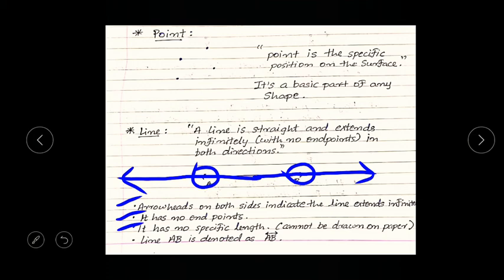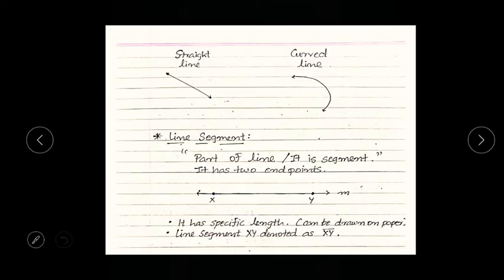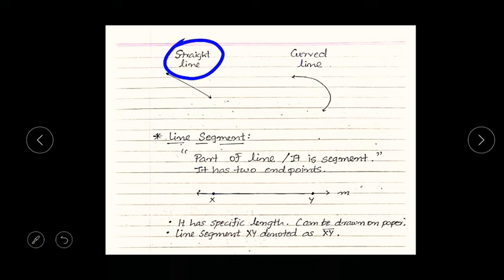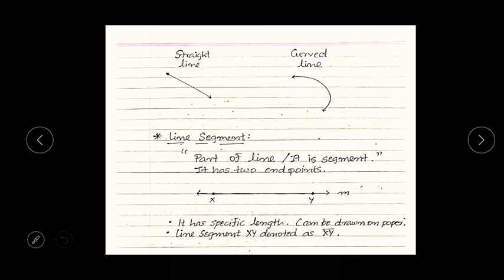The line has no specific length because it extends infinitely, due to which we cannot draw a line on paper, but we can represent it on paper. Line AB can be denoted as AB with two arrow heads on top. As you have learned in lower standards, a line can be a straight line or a curved line, which we can represent accordingly.